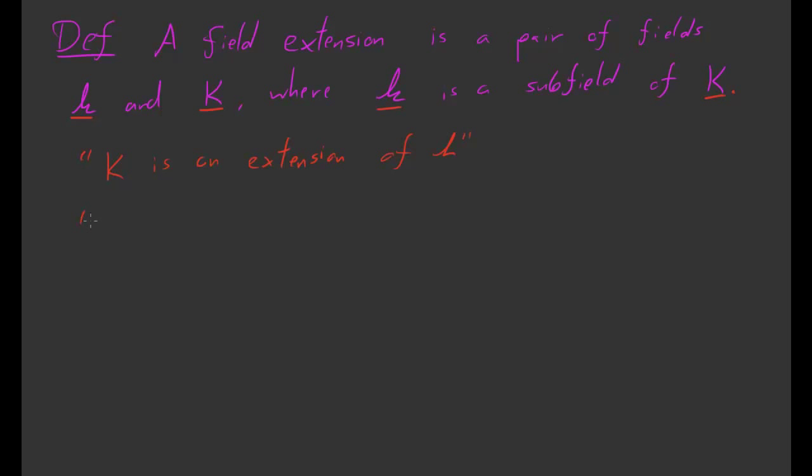This is often written as K over k, or big K over little k. This just means the above. Whenever someone writes K bar k, it means that big K is an extension of little k. That's all that a field extension is.